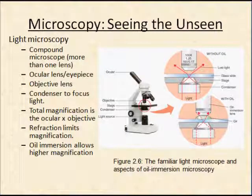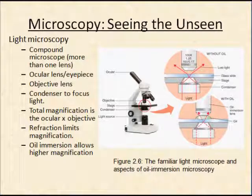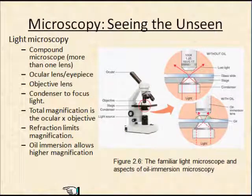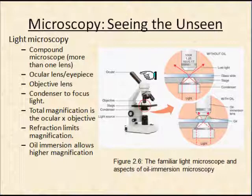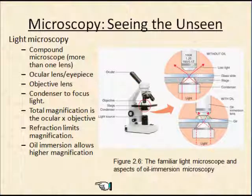The light microscope is referred to as a compound microscope — the ones used in science classes everywhere. They're called compound because they have two lenses: an ocular lens, which is the eyepiece, and an objective lens facing the sample. The combination of these two lenses gives us our magnification. Underneath there's a condenser to help focus the light. Total magnification is the ocular times the objective. Typically an ocular is 10x, and an objective can be anywhere from 4x to 100x, so you could get a magnification up to 1000.